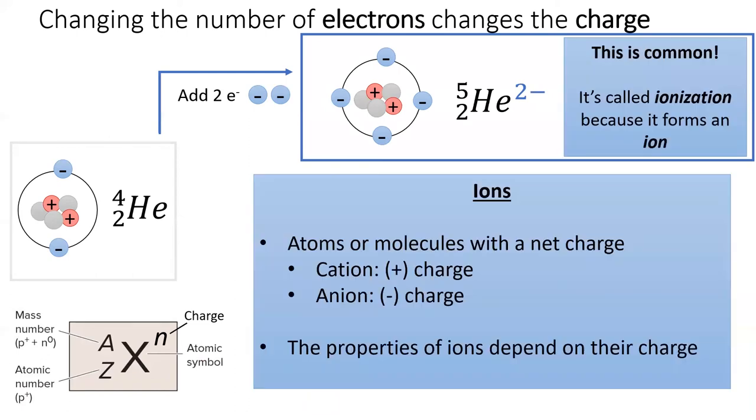Now, electrons move a lot during chemical reactions, so it's very common that elements gain and lose charges. A charged atom is called an ion, and its properties depend on the specific charge that it has. We'll return to this concept in 2.7.